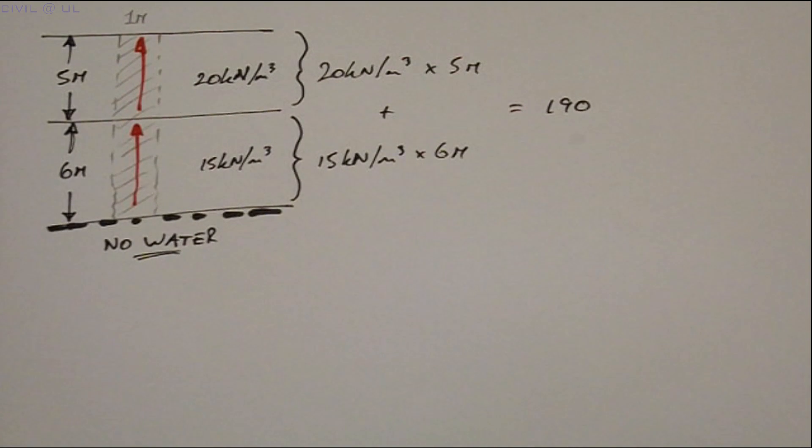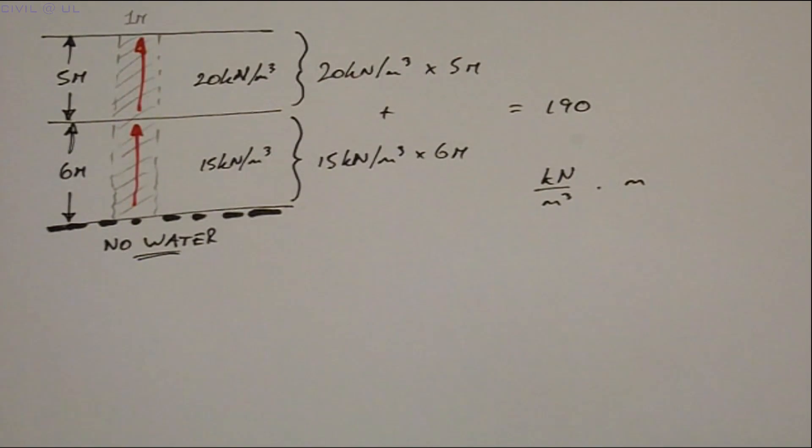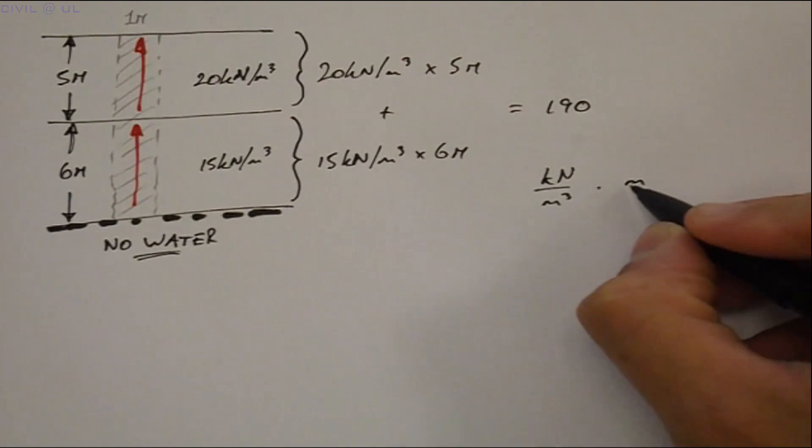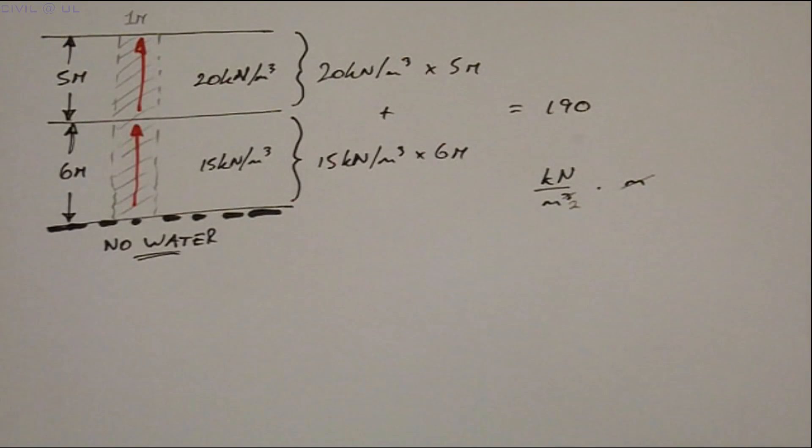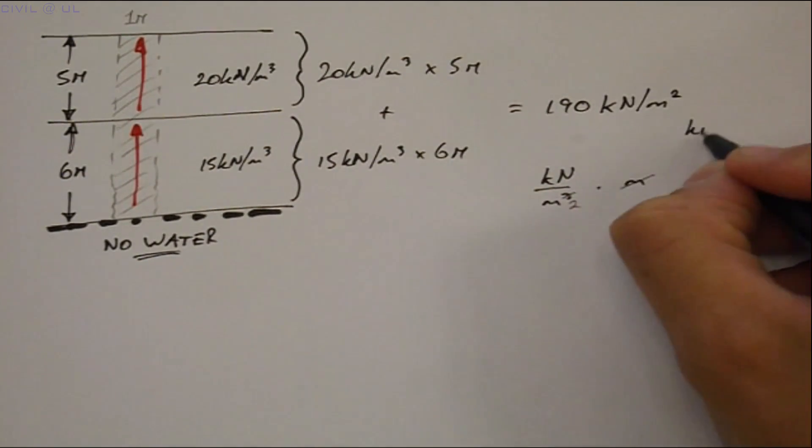And checking our units we find that we have kilonewtons per meter cubed multiplied by meters. Meter above the line cancels from one of the meters below the line. And this gives us 190 kilonewtons per meter squared or kilopascals.